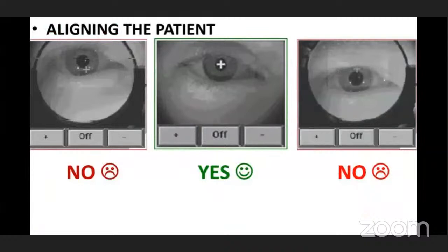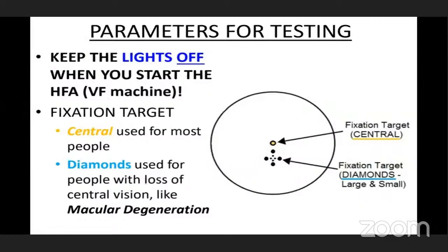For testing parameters, keep the lights off when you start the HFA. We have the fixation target. The central fixation target is yellow in color and is used for most patients. Then we have the diamond fixation target, available in small and large diamonds.